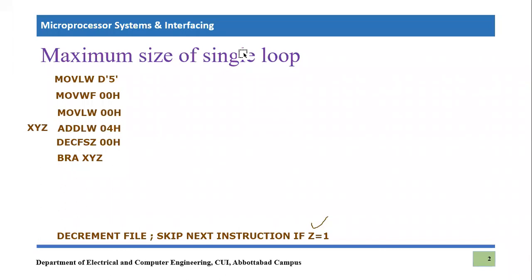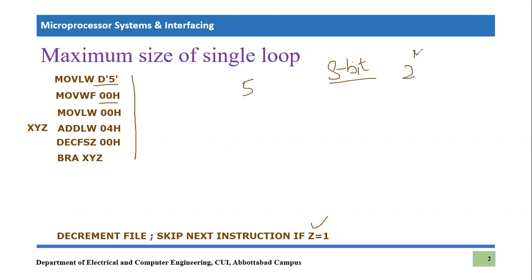Now let's discuss the maximum size of a single loop. The loop size is determined by the counter value stored in the file register. Since every register in the PIC18F452 microcontroller is 8 bits, the maximum value that can be stored is 2 to the power of 8, which equals 256, giving a range of 0 to 255. So the maximum size of a single loop in PIC18F452 is 255.